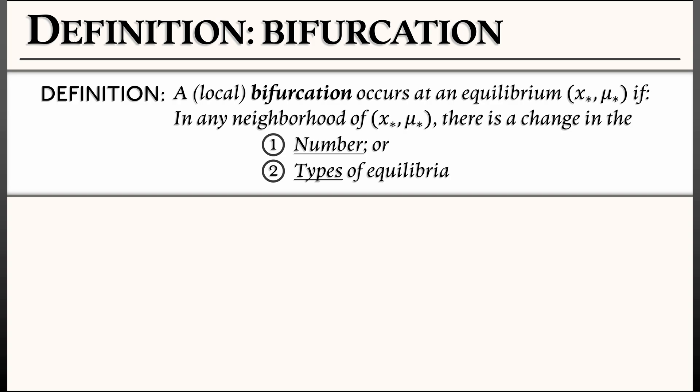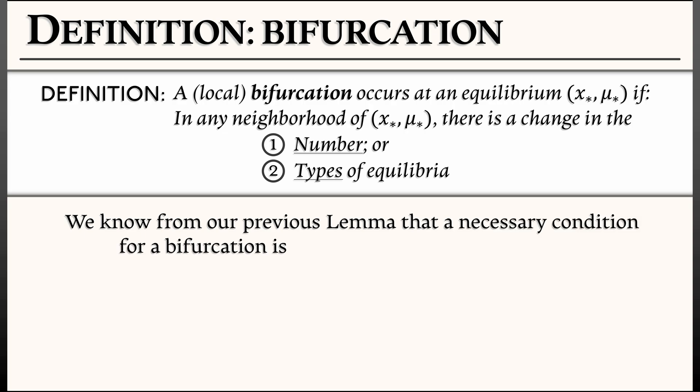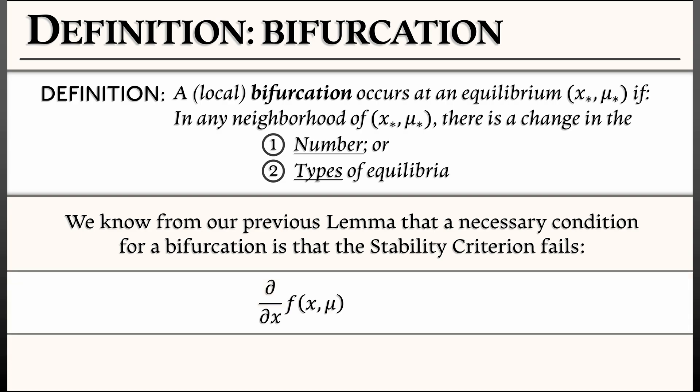Now this, like any math definition, is worth unpacking a little bit. What this means is that a bifurcation occurs at an equilibrium, and the condition is a change in the number or types of equilibria that you have in a small neighborhood. We know from our previous lemma that a necessary condition for such a bifurcation is that the stability criterion fails. And what that means in the context of an equation that has a right-hand side f(x, μ), is that the partial derivative of f with respect to x, evaluated at the equilibrium (x*, μ*), vanishes—is equal to zero. And indeed, bifurcations usually do occur when this condition is satisfied. It is necessary, but not sufficient.